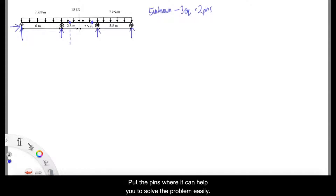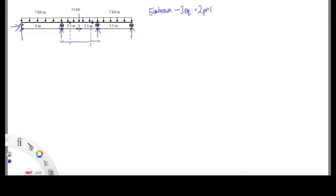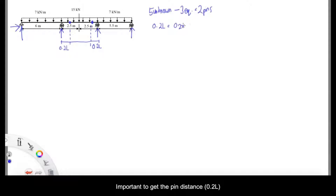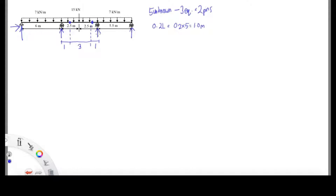Here we put the pins in the middle where we can solve the point load and the uniform loading distribution together. After putting the pins, you need to identify the distance between the pins and the support, which is 0.2L. The L is the span between 2 supports, which is 5 meters, so you get 1 meter distance between the support and the pin.